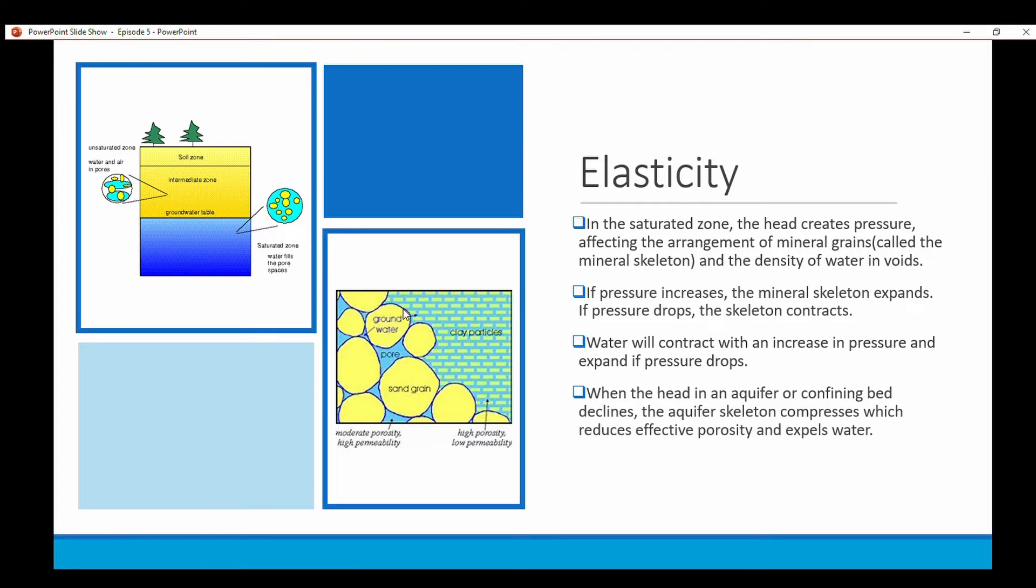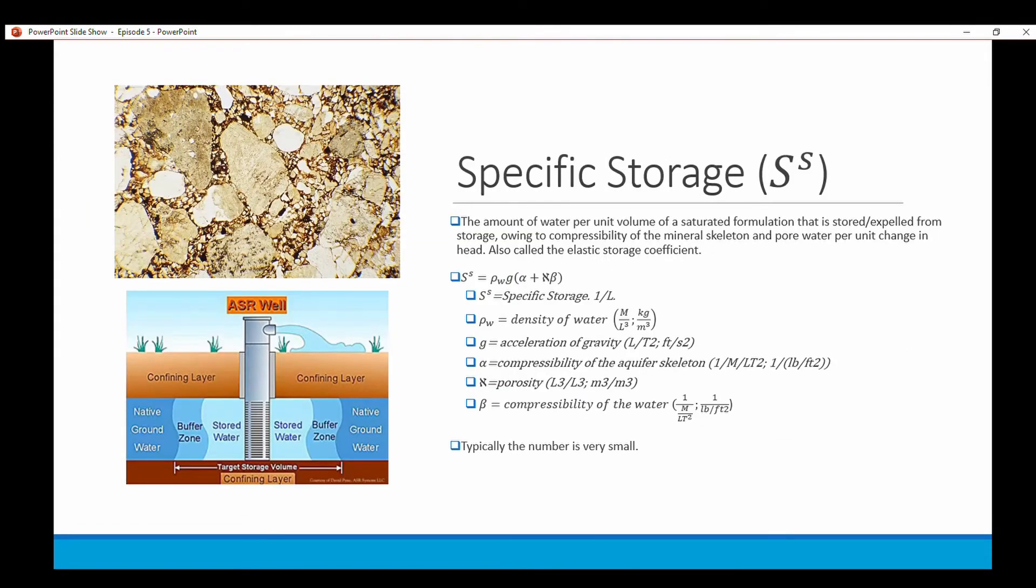Specific storage (Ss) is the amount of water per unit volume of a saturated formation that is stored or expelled from the storage owing to the compressibility of the mineral skeleton and pore water per unit change in head, also called the elastic storage coefficient. The formula to figure out specific storage is basic algebra.